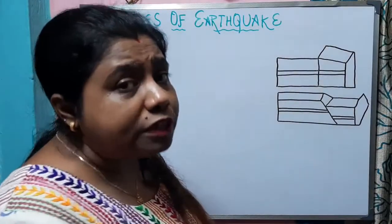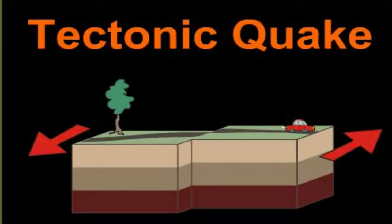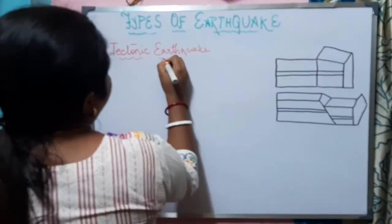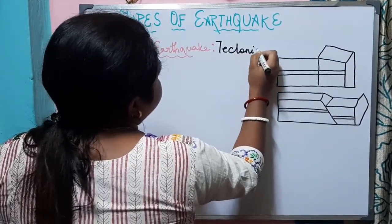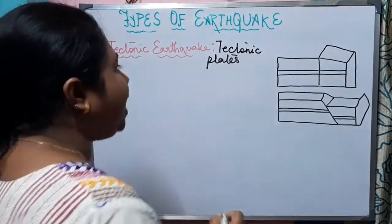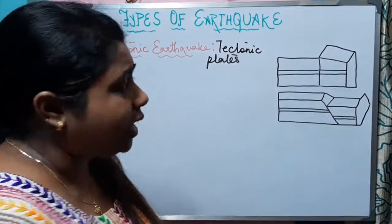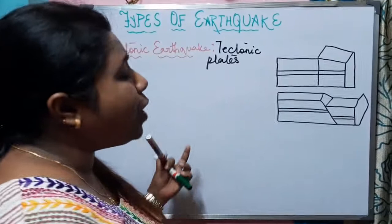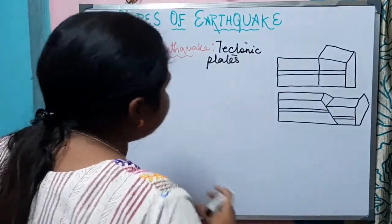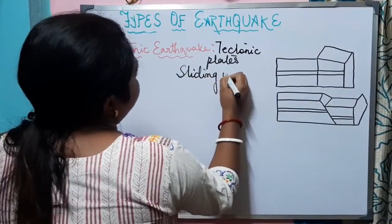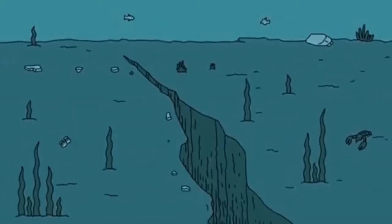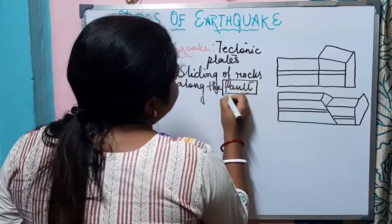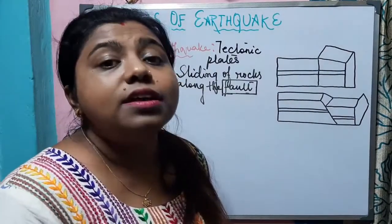The first type is the tectonic earthquake. From the word 'tectonic' you can understand that this earthquake is related to the movement of tectonic plates. The tectonic plates are constantly moving, though at a slower rate. Due to this movement, pressure is created in the earth's crust, causing sliding of rocks along the fault, which releases energy in the form of seismic waves.